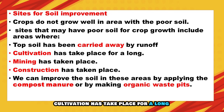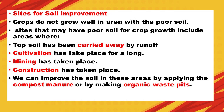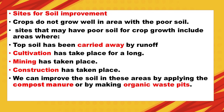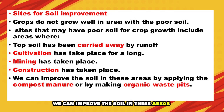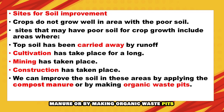Sites that may have poor soil for crop growth include areas where topsoil has been carried away by runoff, where cultivation has taken place for a long time, where mining has taken place, and where construction has taken place. We can improve the soil in these areas by applying compost manure or by making organic waste pits.